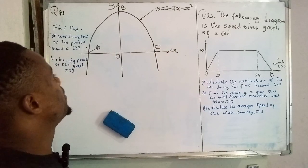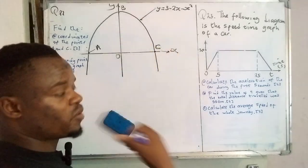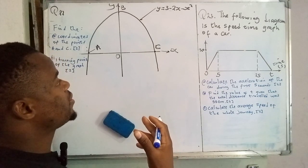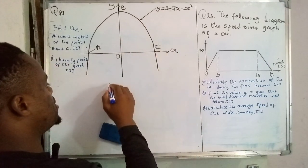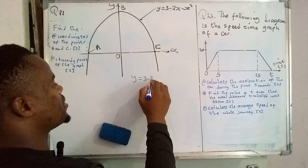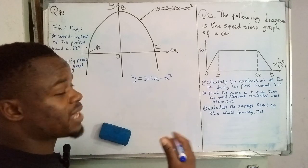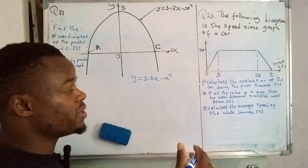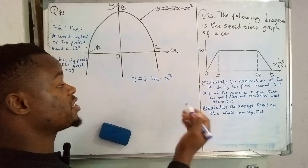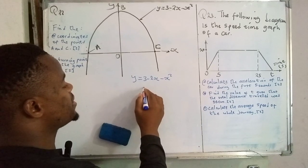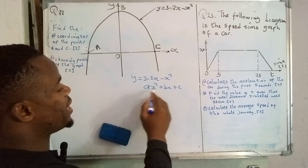How do you determine the x-intercepts? You have to make use of the quadratic function or equation that you've been given, which they used to draw the parabola. The function is y = 3 − 2x − x². It hasn't been written in standard form. The standard form of a quadratic equation is ax² + bx + c, where a, b, and c are constants.